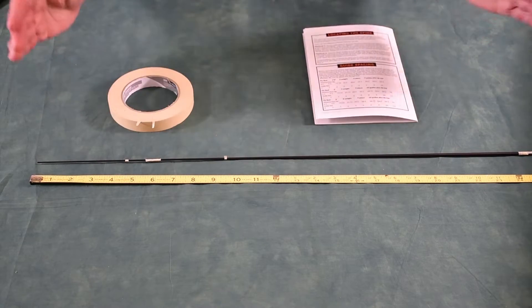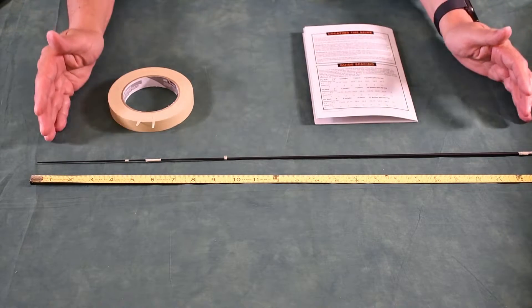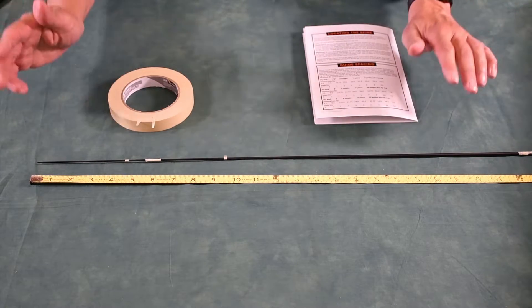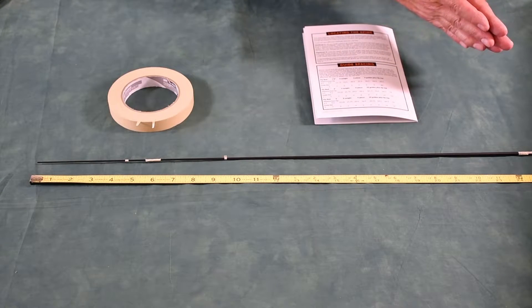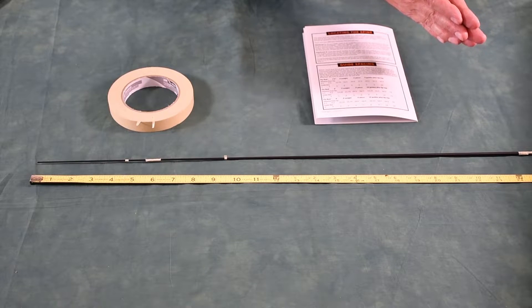To make it easy, I'll have my entire blank assembled and I'll have the tape measure laid out so I can just go from the first all the way down to the last guide. It's that easy.